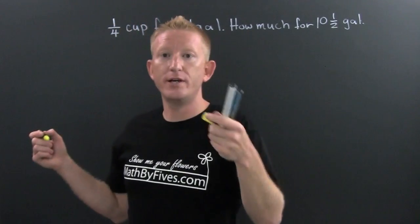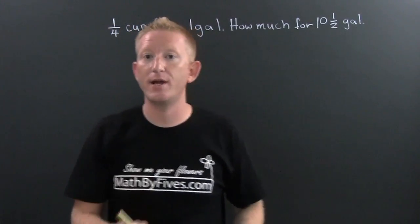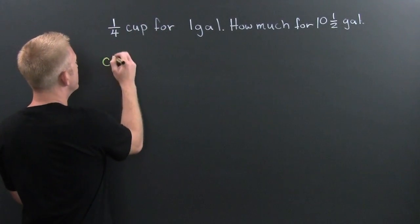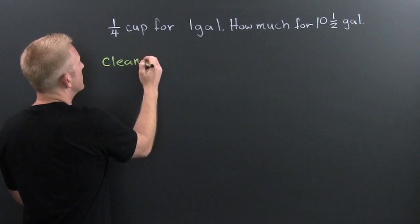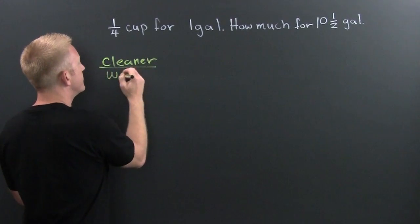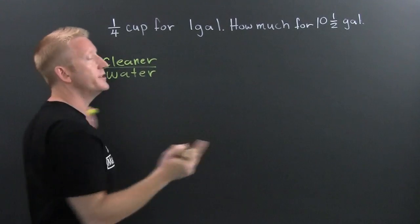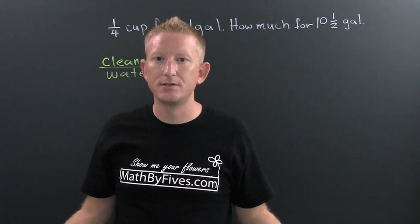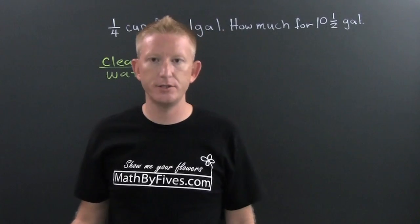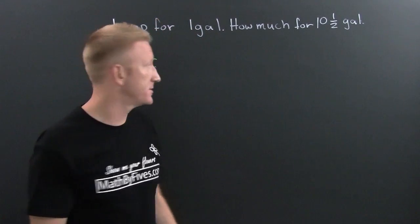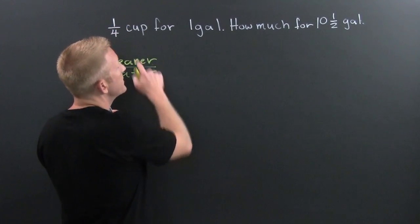We must first set our ratio. We must first set our rate. Let's set our rate for cleaner. Is that cleaner? Cleaner to water. Once you set your rate, that's going to help you keep it straight. What? The proportion in order to find out how much cleaner we need for ten and a half gallons. So now that we've set cleaner to rate, we're going to take our known.